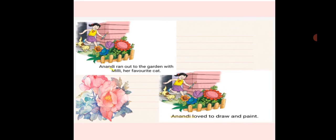Anandi ran out to the garden with Millie, her favorite cat. Who is Millie? See the picture — Millie is the cat of the little girl Anandi. Anandi loved to draw and paint.